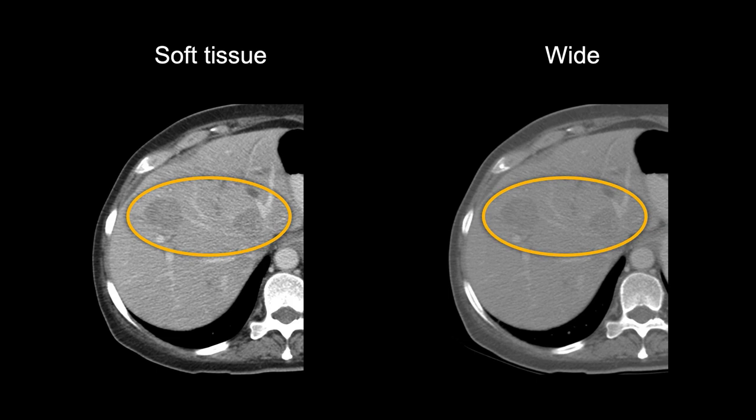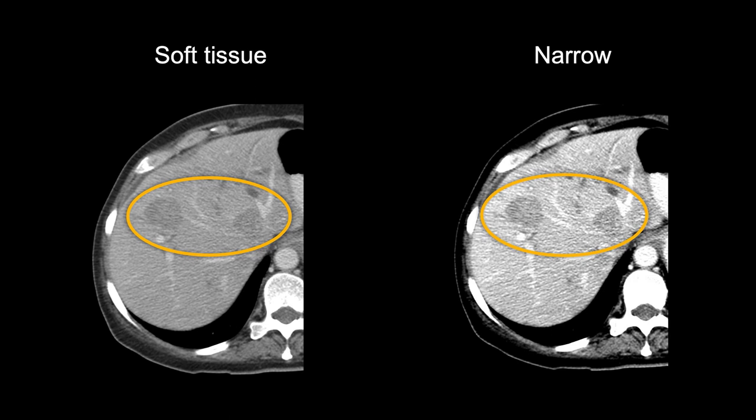But if we narrow the window, the changes in grayscale values occur more abruptly, which emphasizes subtle differences, making it easier to find subtle abnormalities in the soft tissue. In fact, a narrower window is so commonly used for viewing the liver that it is referred to as the liver window.